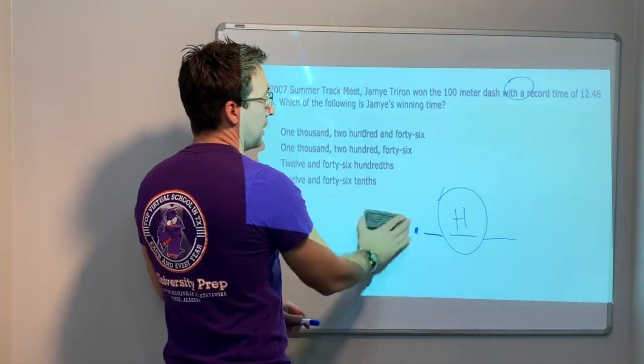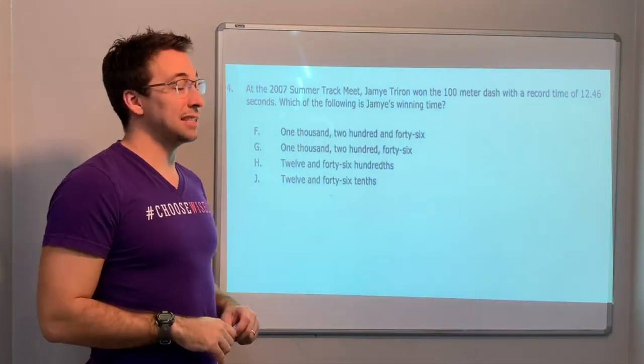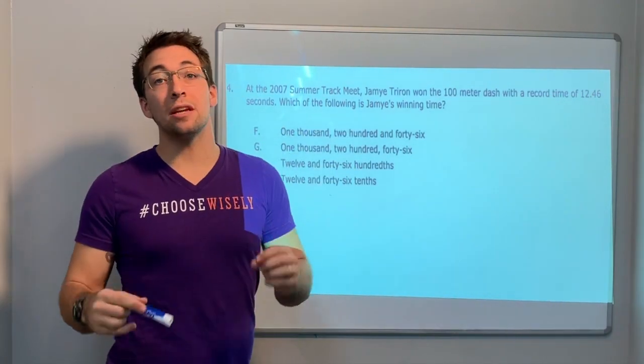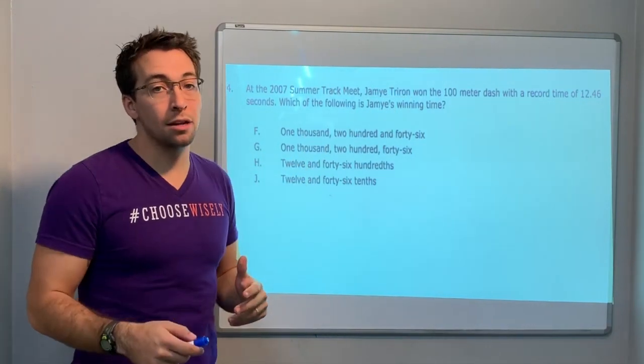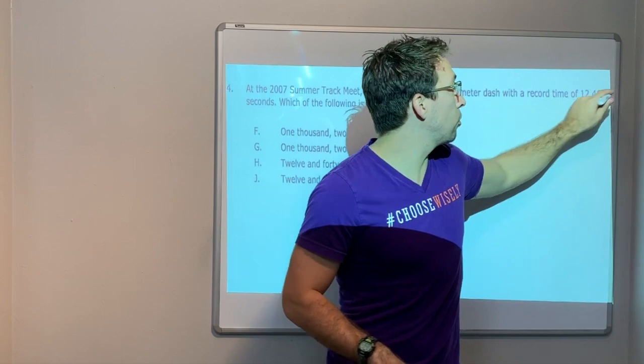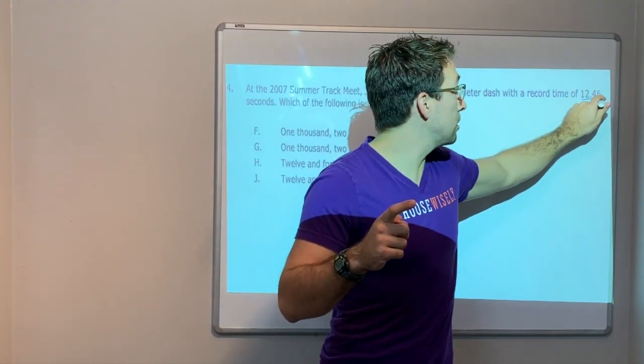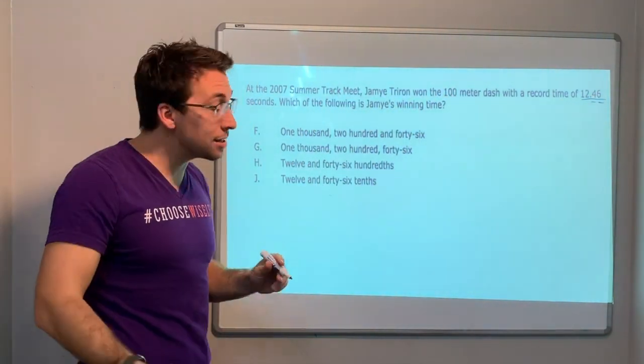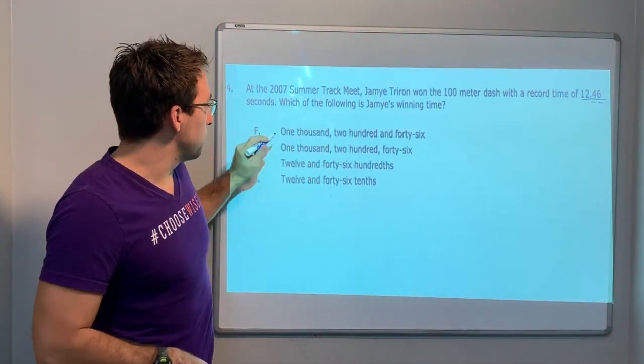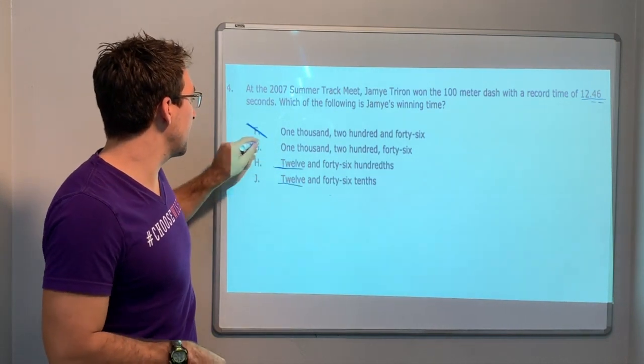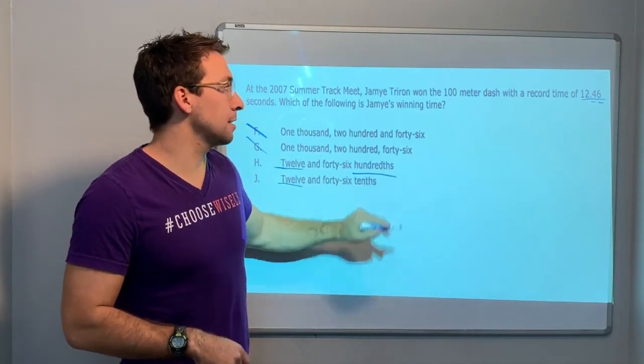Last question for this video. We're going to have a second video on 5.2A. We'll try to keep these videos about five minutes each. At the 2007 Summer Track Meet, Jamie Treeron won the hundred meter dash with a record time of 12.46. Twelve and forty-six - there's two values, one, two - so it's the hundredths. Twelve and forty-six hundredths seconds. Which of the following is Jamie's winning time?